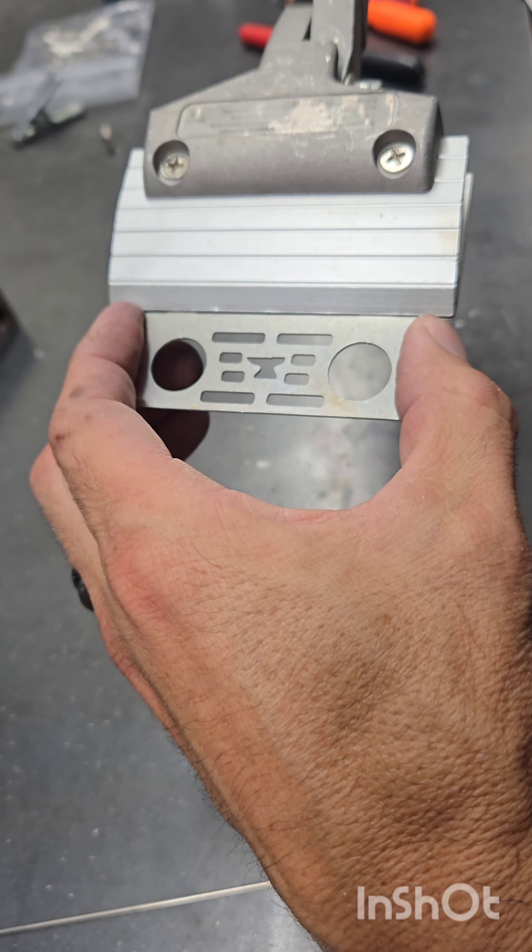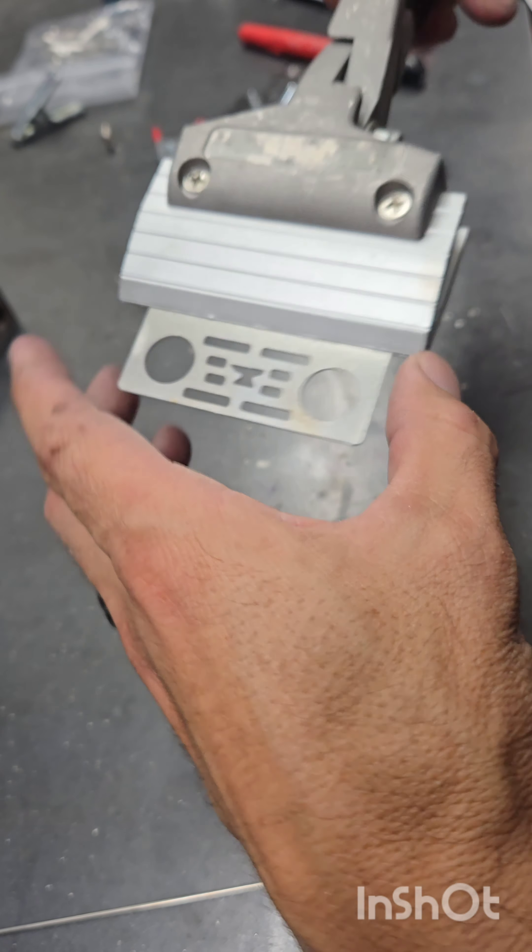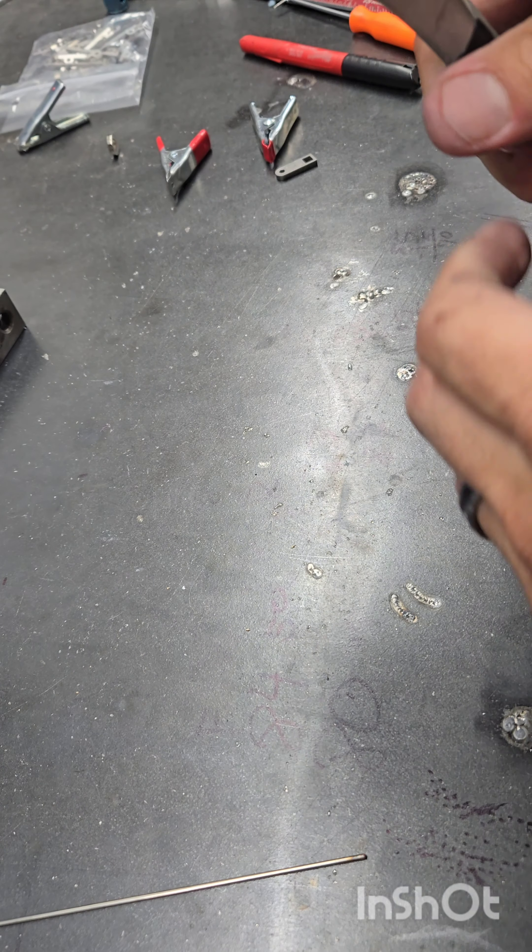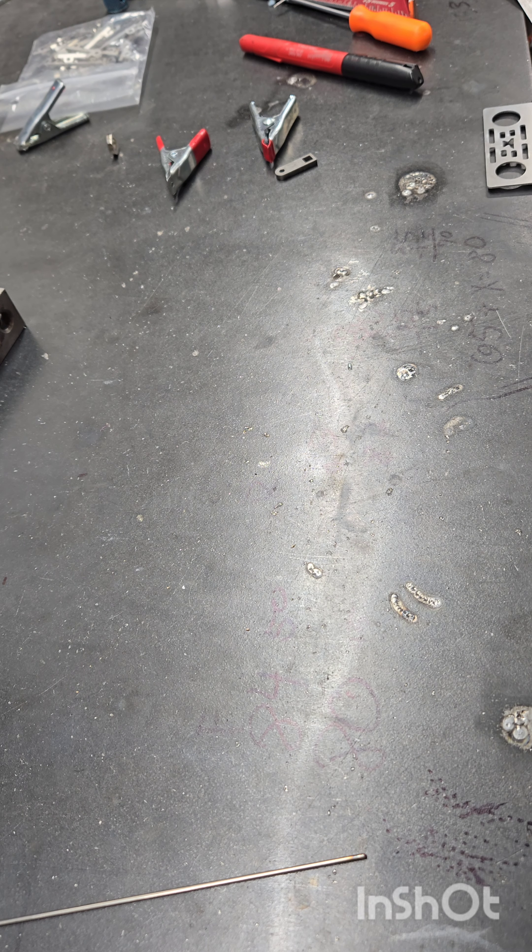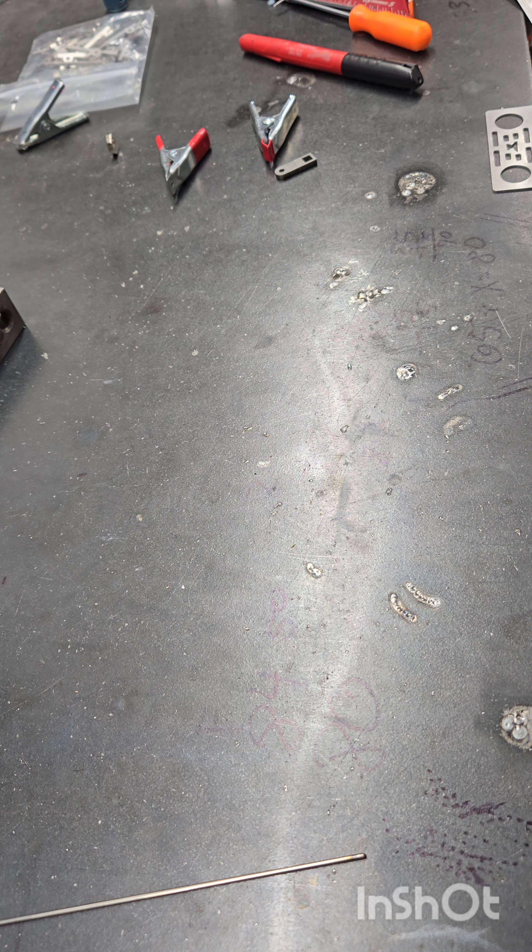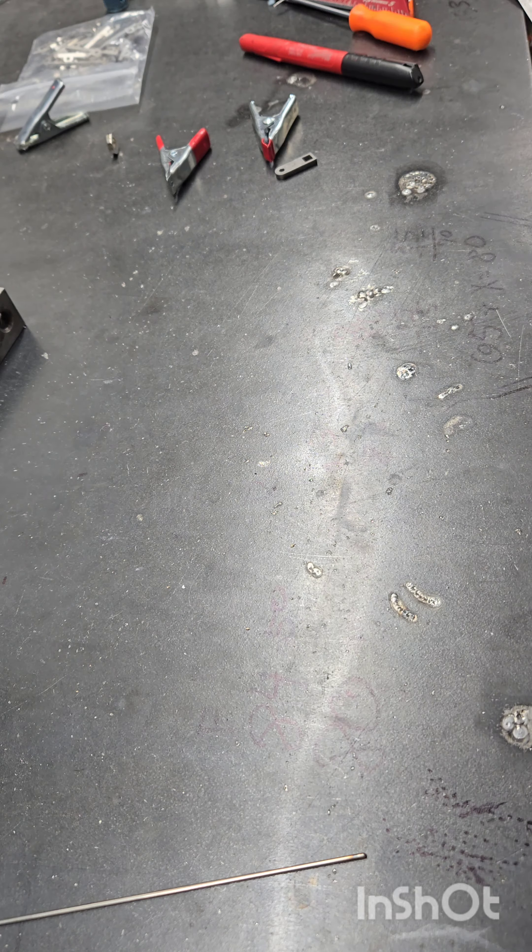I'm using some seamer pliers, I believe they're called, you can get these on Amazon, they're Harbor Freight grade, they're like 10 bucks-ish. I know it's hard to see here, but I'm butted up against the edge of my table, and then just folding up.